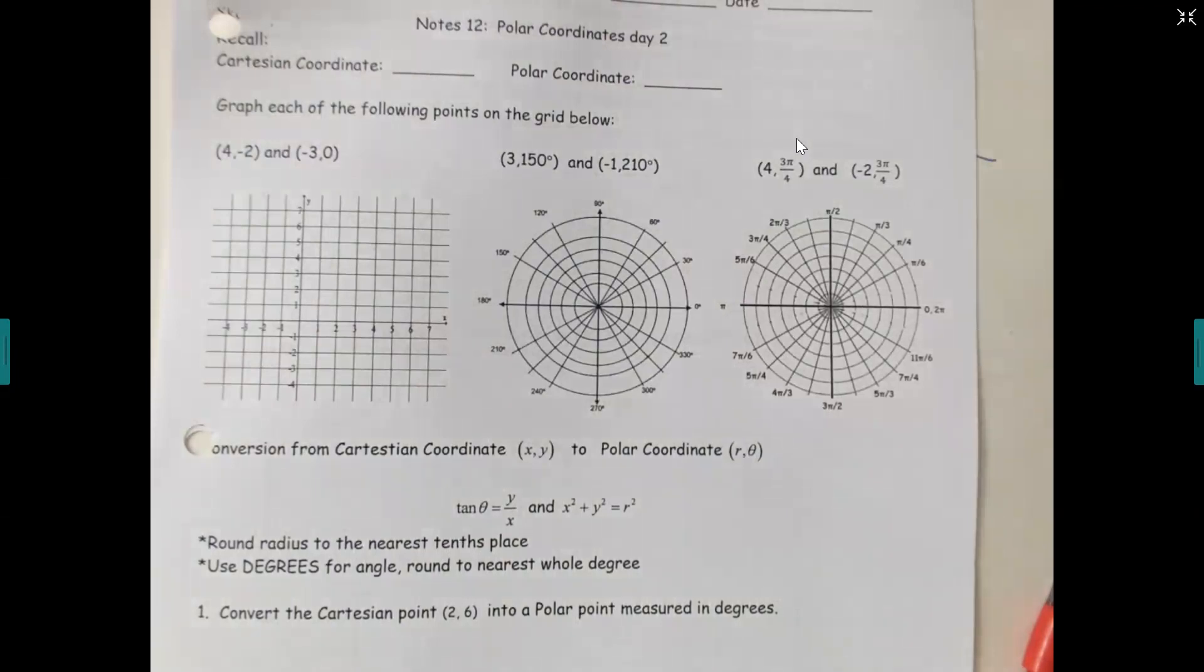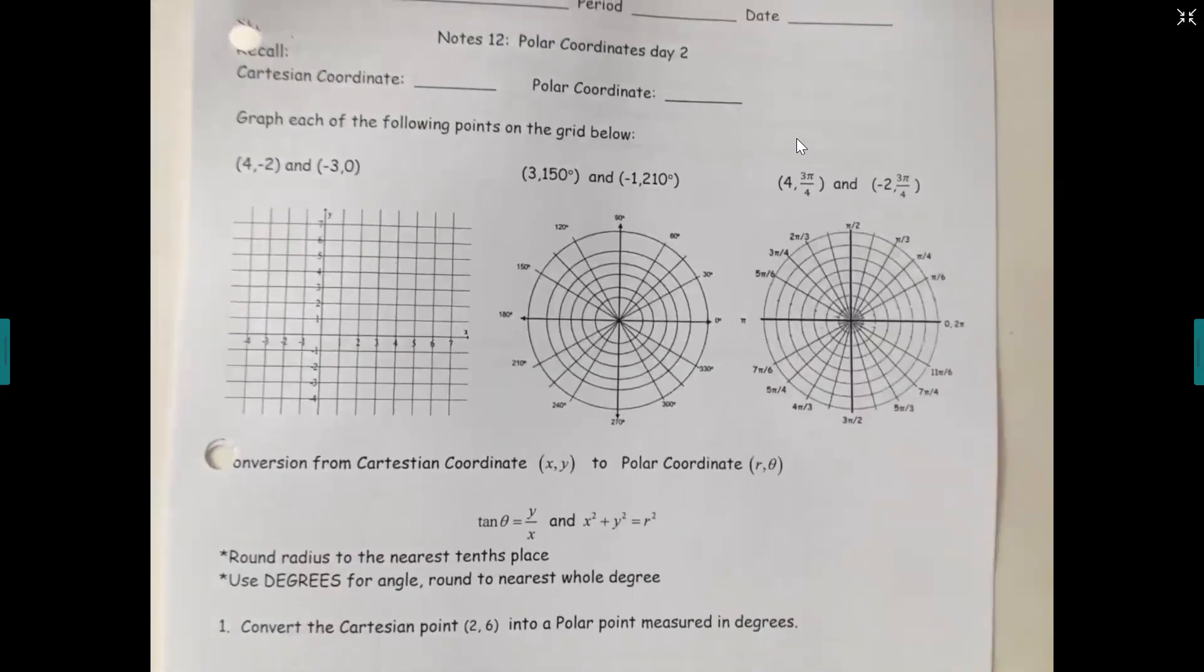So you have the second day of polar coordinates today. It should be pretty quick. Last time we learned if you had the r and the theta, we converted to x and y. Do you remember that? Today we're going to learn to go the opposite direction. So you'll have the x and the y, and you'll be converting into r theta. Let's start off just putting some points on the graph.